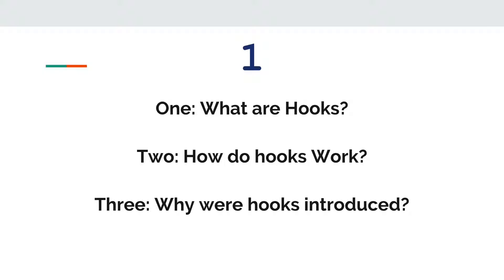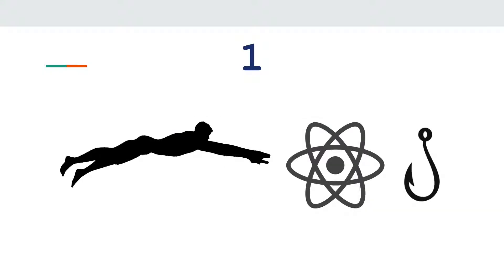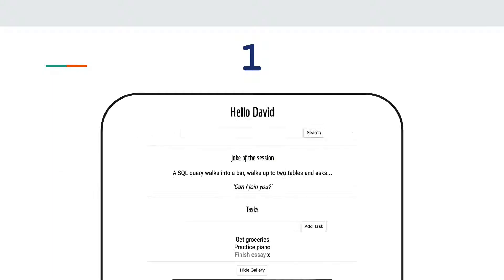In the course journey, you're going to start with that initial question: what are hooks? In section one, you're going to dive into React code using hooks right away so that you start seeing firsthand what the code for hooks really looks like. As you're coding hooks, you're going to be building this application called Home.